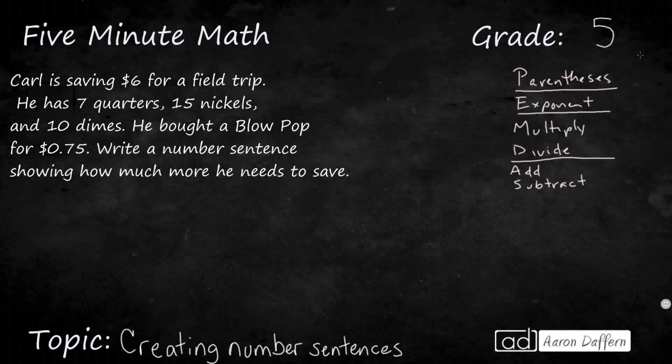So what do we have here? Carl is trying to save money for a field trip. He's already got some coins. Then he buys a blow pop, which means he's losing some money, and we need to write a number sentence showing how much more he needs to save. All right, so let's call that S. How much more does he need to save?